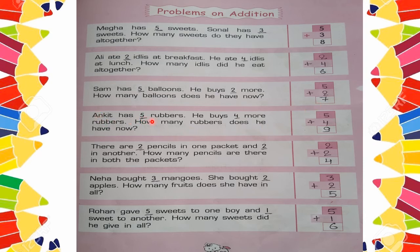Next: Ankit has 5 rubbers and he buys 4 more. How many rubbers does he have now? Write 5, then write 4, and add them. Counting: 6, 7, 8, 9. So 5 plus 4 is equal to 9.